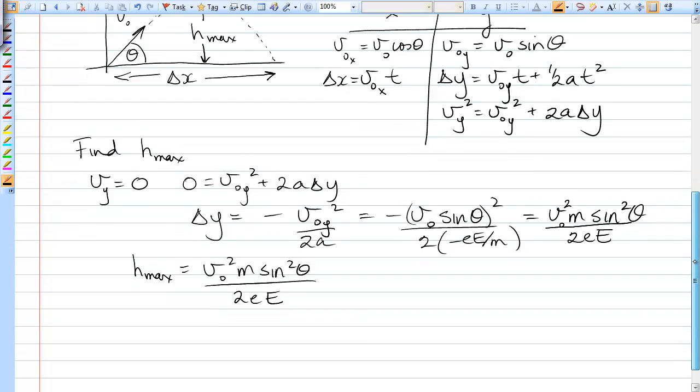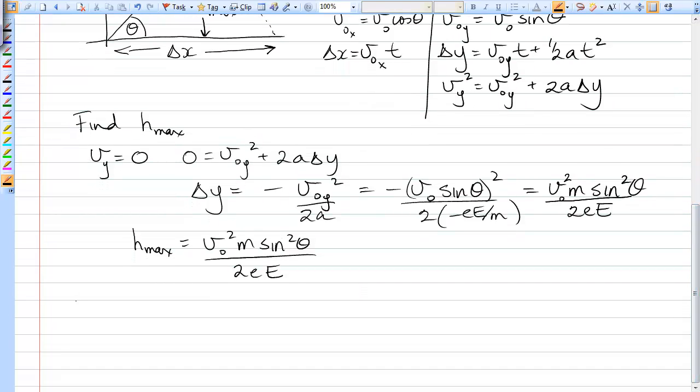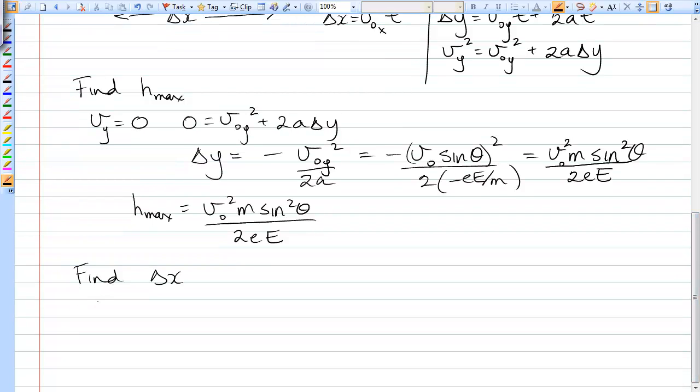Now we want to find delta X, the maximum horizontal distance. To find delta X, we need T, we need the time. We'll notice that when the position is delta X, delta Y is zero when delta X is max.